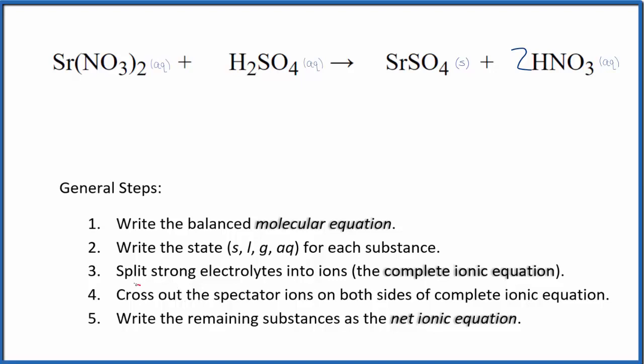Now we can split the strong electrolytes into ions. That'll give us the complete ionic equation. Strontium is in group 2 on the periodic table, so we'll put a 2+ there. The whole nitrate ion is 1-. So we have the strontium ion, Sr2+, and then 2 nitrate ions. With sulfuric acid, hydrogen is in group 1, that'll be 1+ for each one, and the whole sulfate is 2-. So 2 hydrogen ions and the sulfate ion.